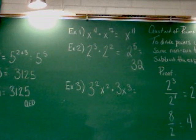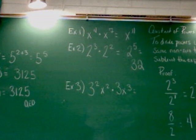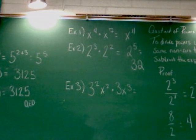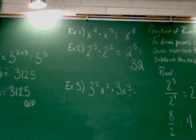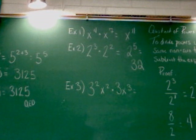Like on example 3, it says 3 the 2nd x to the 2nd. Example 3 now, I'm putting both things in the same problem. So you've got plain old bases that are numbers and you've got bases that are variables. 3 squared x squared times 3 x cubed.